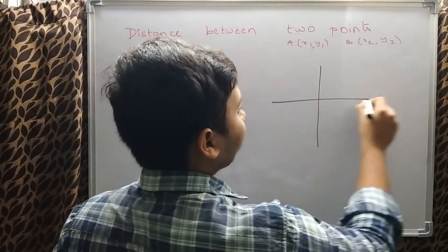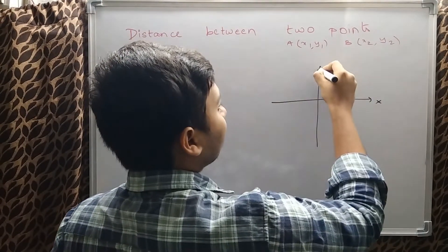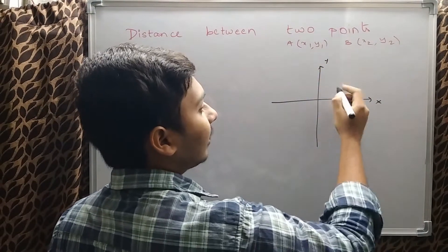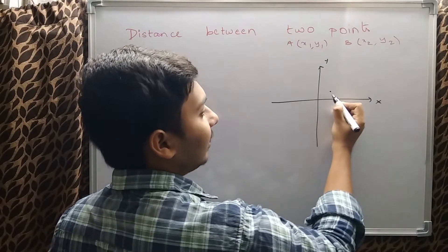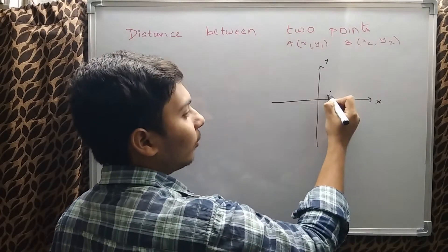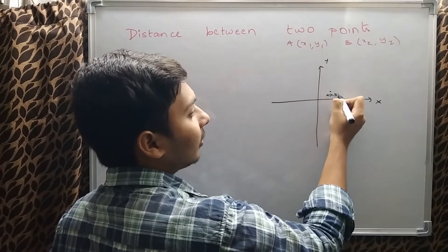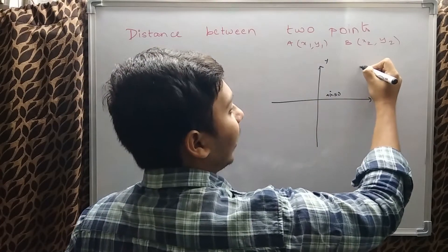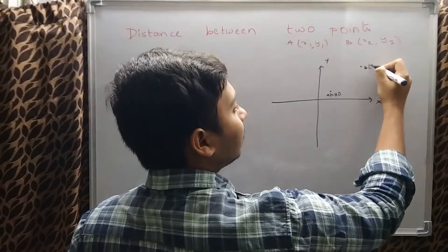Take a coordinate axis — this is the x-axis and this is the y-axis. Let this be point A(x1, y1) and let this be point B(x2, y2).